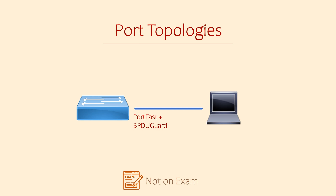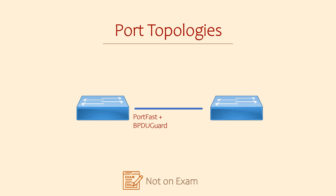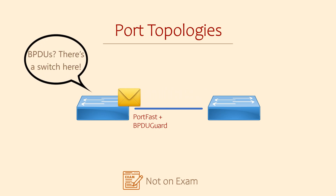Imagine we have configured an edge port with PortFast and connected a workstation. To be safe, we also configure BPDU Guard. Then someone comes along, disconnects the workstation, and connects a switch. When the new switch is connected, it will start sending BPDUs. The original switch will see this and think that's not right — there must be a switch connected. The port will then lose its edge port status and become a regular port. In this way, our network is still protected from loops.